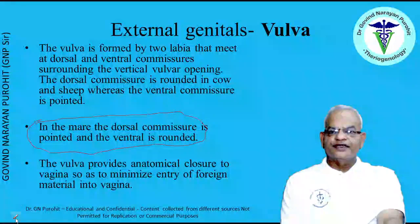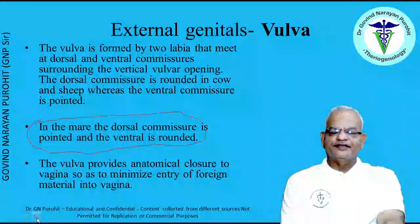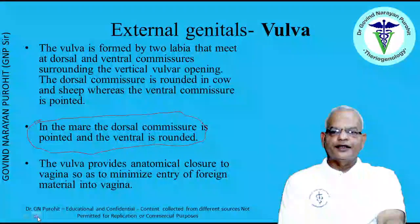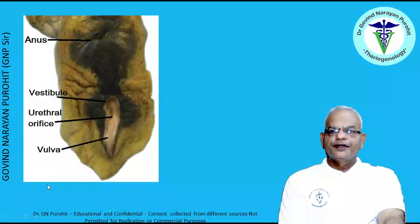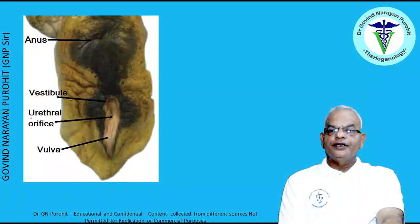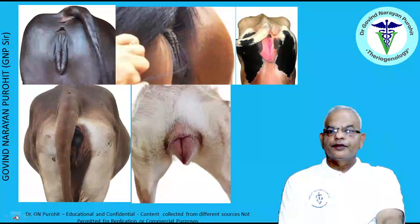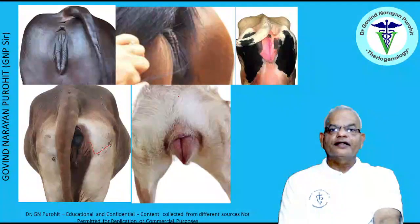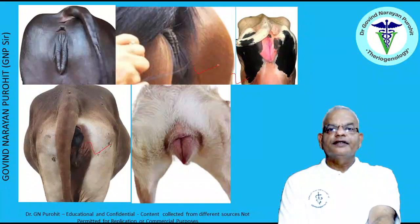The vulva provides anatomical closure to the vagina to minimize entry of foreign material. This is very important in the mare especially, because with aging some mares develop loose vulva lips, which is corrected by the Caslick operation or vulvoplasty. In these pictures you can see the anus, vestibule, urogenital orifice, and the external vulva lips of cattle, an HF cow, a mare, a bitch, and a buffalo.